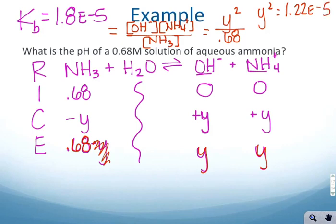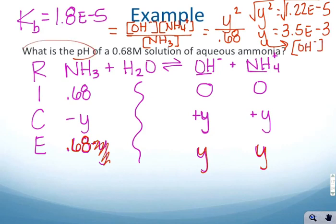We square root both sides, and y is equal to 3.5×10^-3.